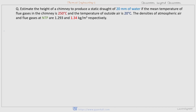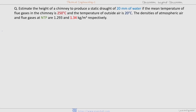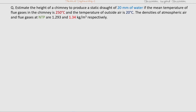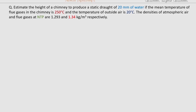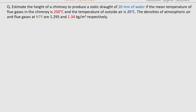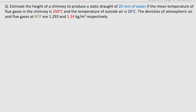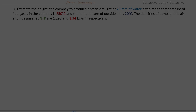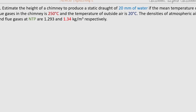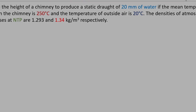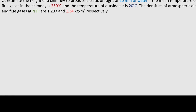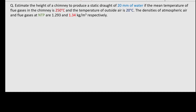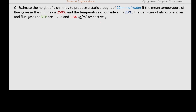Estimate the height of a chimney to produce a static draft of 20 millimeter of water, if the mean temperature of the flue gases in the chimney is 250 degree centigrade and the temperature of outside air is 20 degree centigrade. The densities of atmospheric air and flue gases at NTP are 1.293 and 1.34 kg per meter cube respectively.